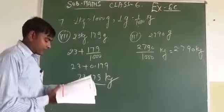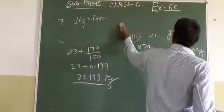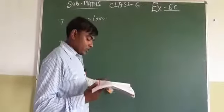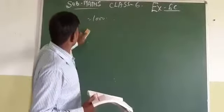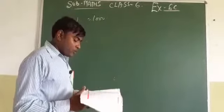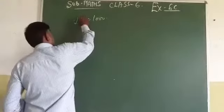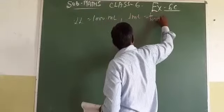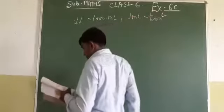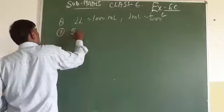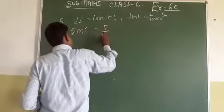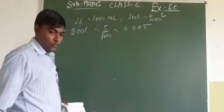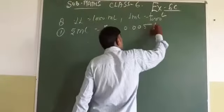Now let us talk about question number 8. In question 8, express using decimal. 1 litre equal to 1000 millilitre, so 1 ml equal to 1 upon 1000 litre. For the first part of question 8, 5 ml: 5 upon 1000 equal to 0.005 litre.